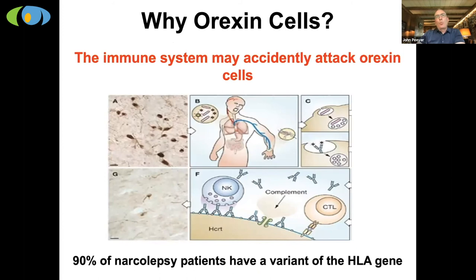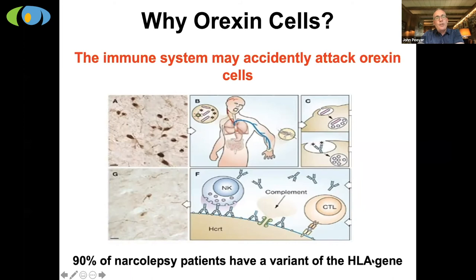Shifting away from our work — why are orexin cells damaged in people with narcolepsy? We don't have a complete understanding, but we think there may be an unusual immune system response — that the immune system accidentally attacks orexin cells. One clue is that almost all people with narcolepsy have an unusual change in a particular gene called the HLA gene, suggesting an immune issue in which this gene may lead the immune system to accidentally target and knock out orexin cells.